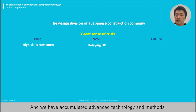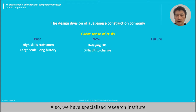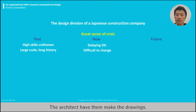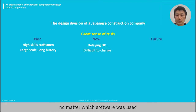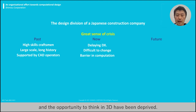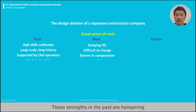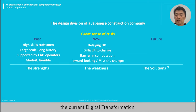Our company has a long history, and we have accumulated advanced technology and methods. However, on the other hand, it is difficult to introduce a new method. Also, we have a specialized research institute, but the technology does not get connected to be used by designers. Although it is unique to the Japanese design field, we have the CAD of builders — the architects have them make their drawings and their drawing time is reduced. However, no matter which software was used, the designer was not affected as long as the drawings could be made. Therefore, the development of BIM and the opportunity to think in 3D have been deprived. In addition, Japanese culture, which tends to be closed inside, makes it difficult to see changes in the world. These strengths in the past are hindering the current digital transformation.